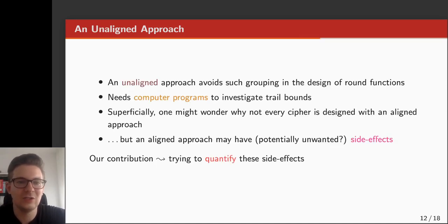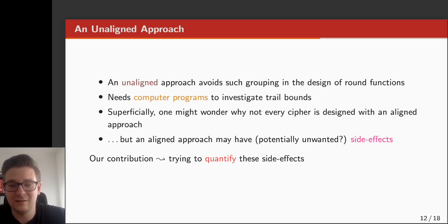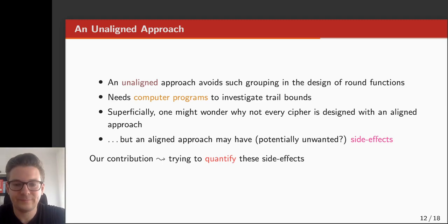Clearly, if there is an aligned approach, there is also something we call an unaligned approach. In an unaligned approach, the idea is to avoid any such groupings when designing the round functions. In general, although there are exceptions, this means that you need computer programs to investigate the trail bounds. But this leads to the question: if it seems like there are only advantages to the aligned approach, why is not every cipher designed with it? It turns out that an aligned approach may have some potentially unwanted side effects, which we quantify in our paper for four different primitives.